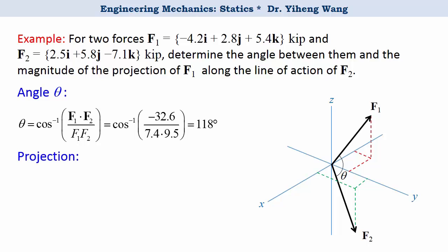For the projection force of F1 along the line of action of F2, it simply equals the magnitude F1 multiplied by cosine theta. The absolute value is 3.4 kip. This answers the question, but let's also look at an alternative way to solve this problem.